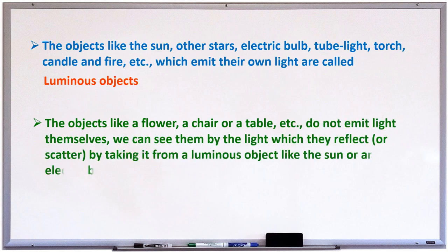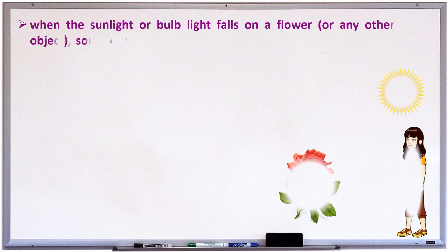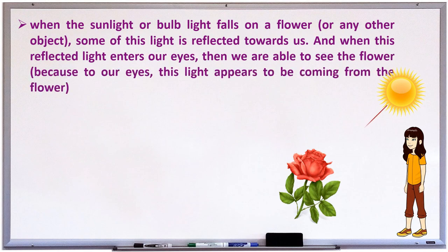Whereas, the objects like a flower, a chair or a table, etc., do not emit light themselves. But we can see them by the light which they reflect or scatter by taking it from luminous objects like the sun or an electric bulb or fire, etc. Children, when the sunlight or bulb light falls on a flower or any object, some of its light is reflected towards us. And when the reflected light enters our eyes, then only we are able to see the flower.